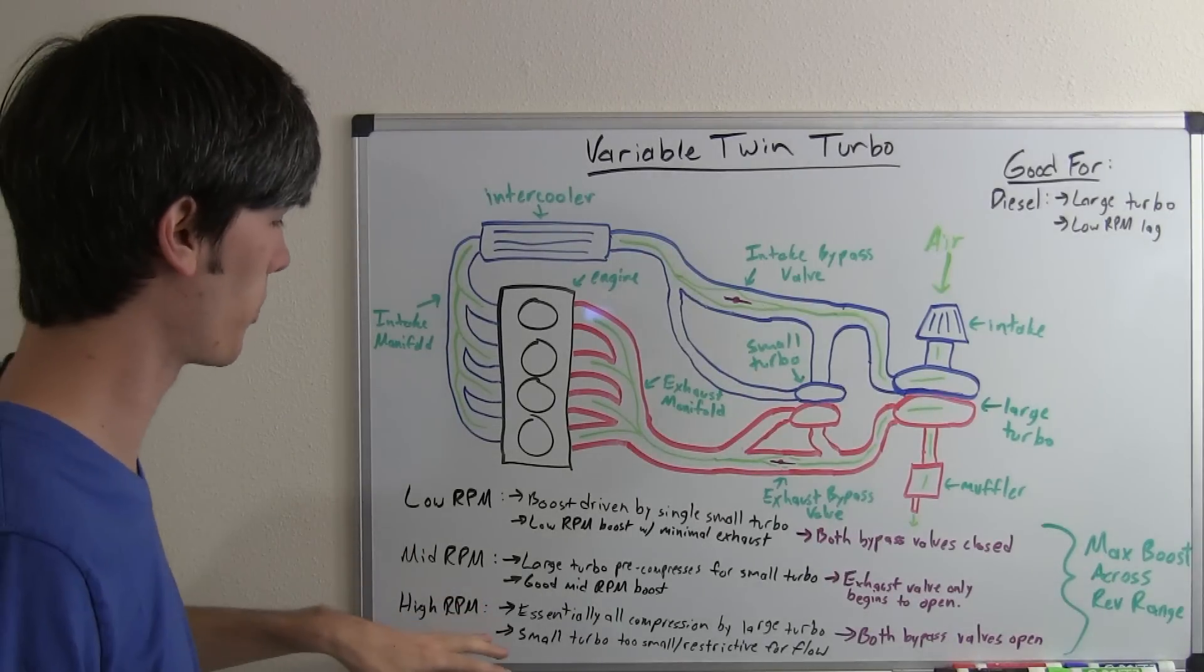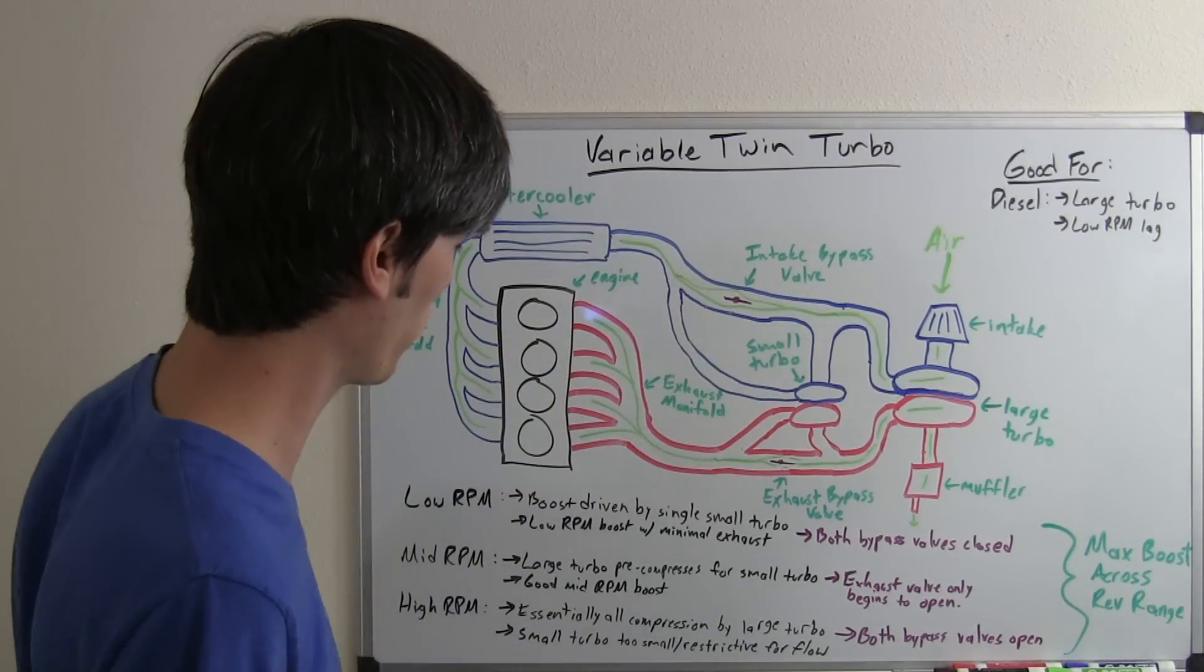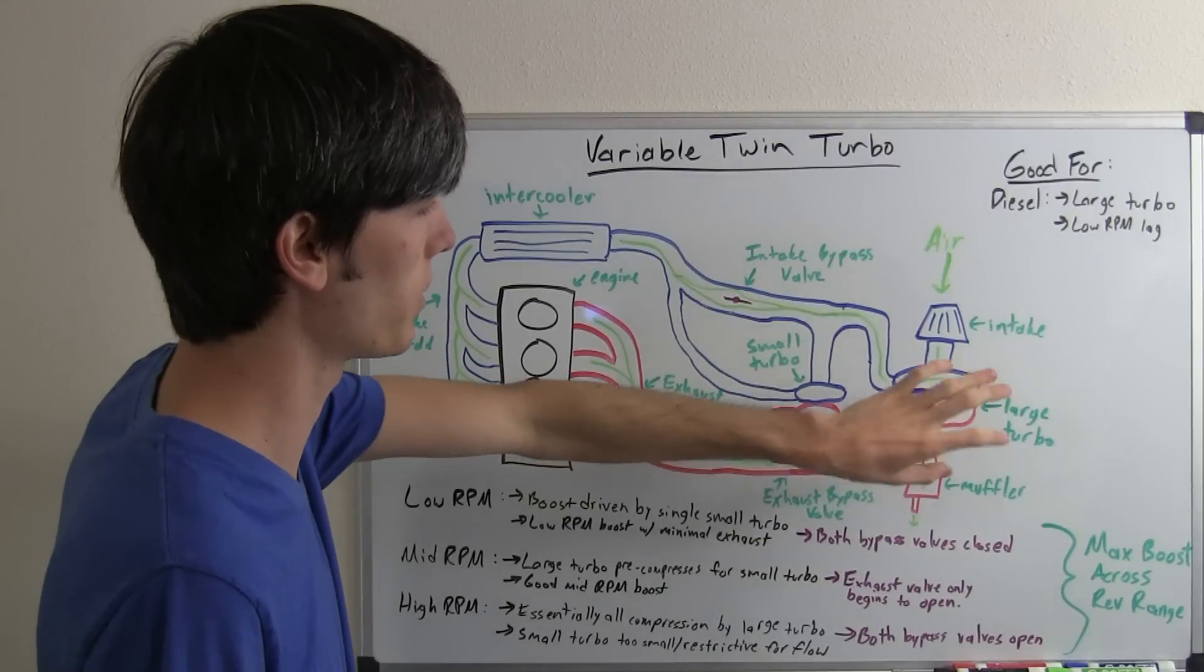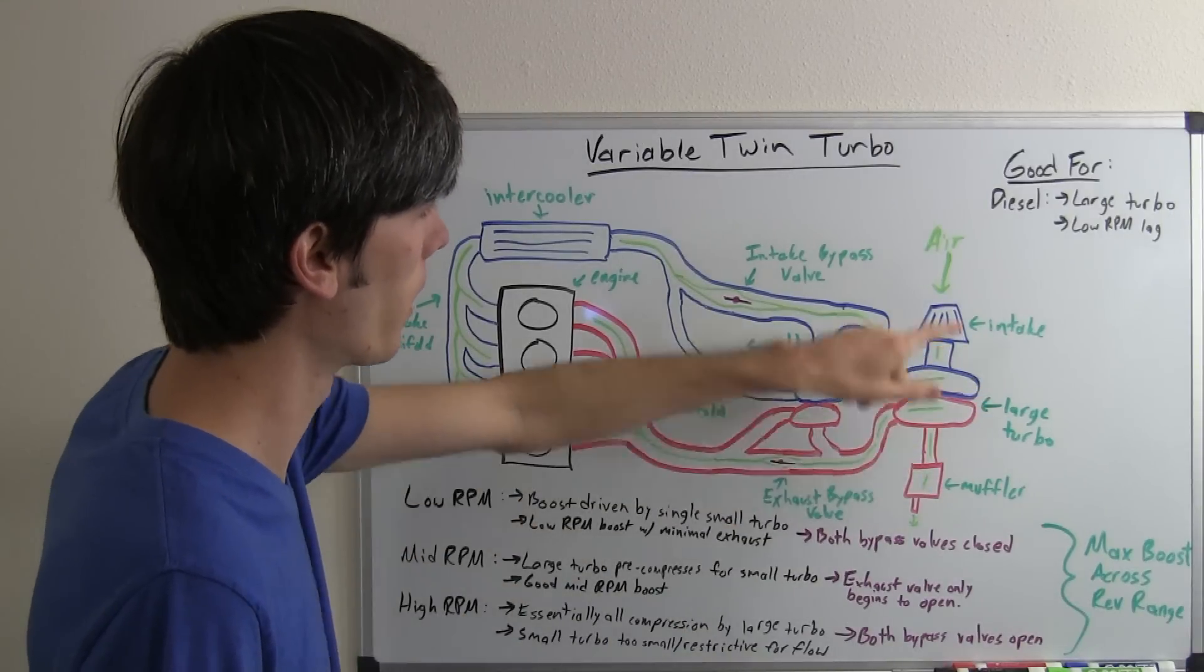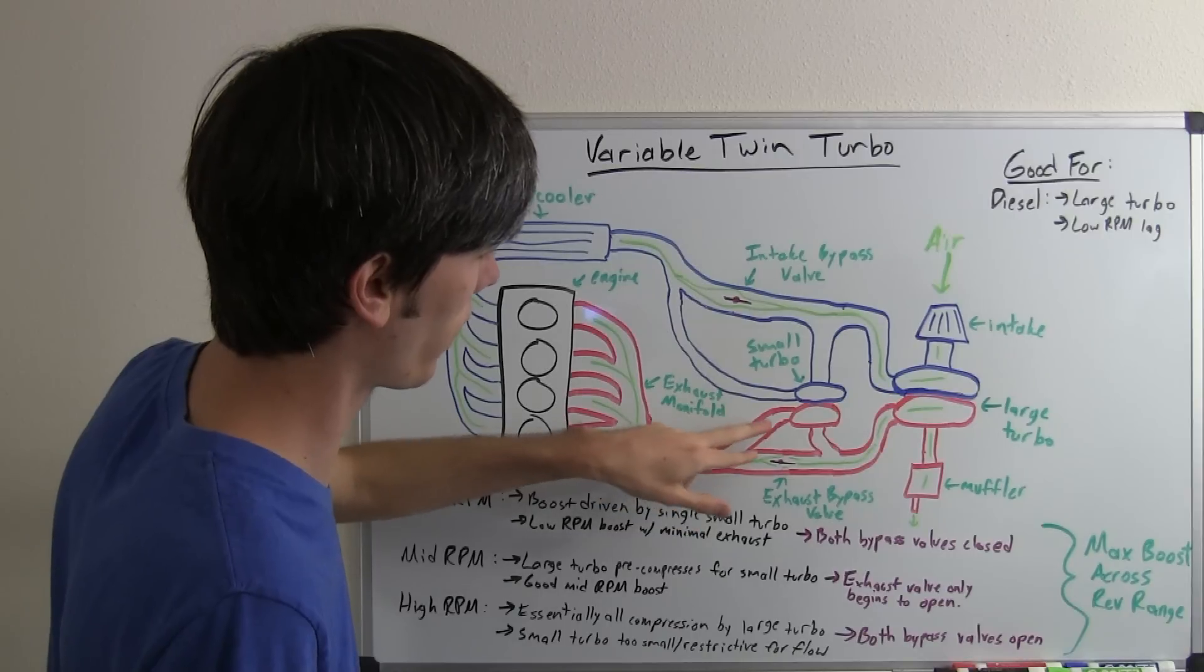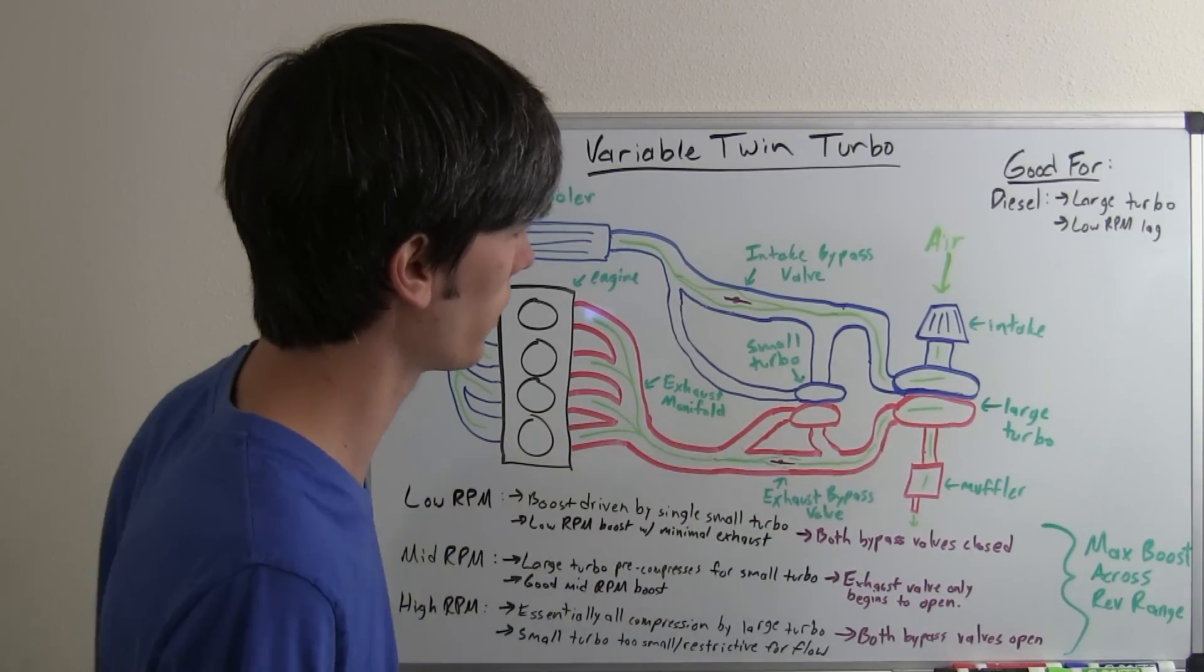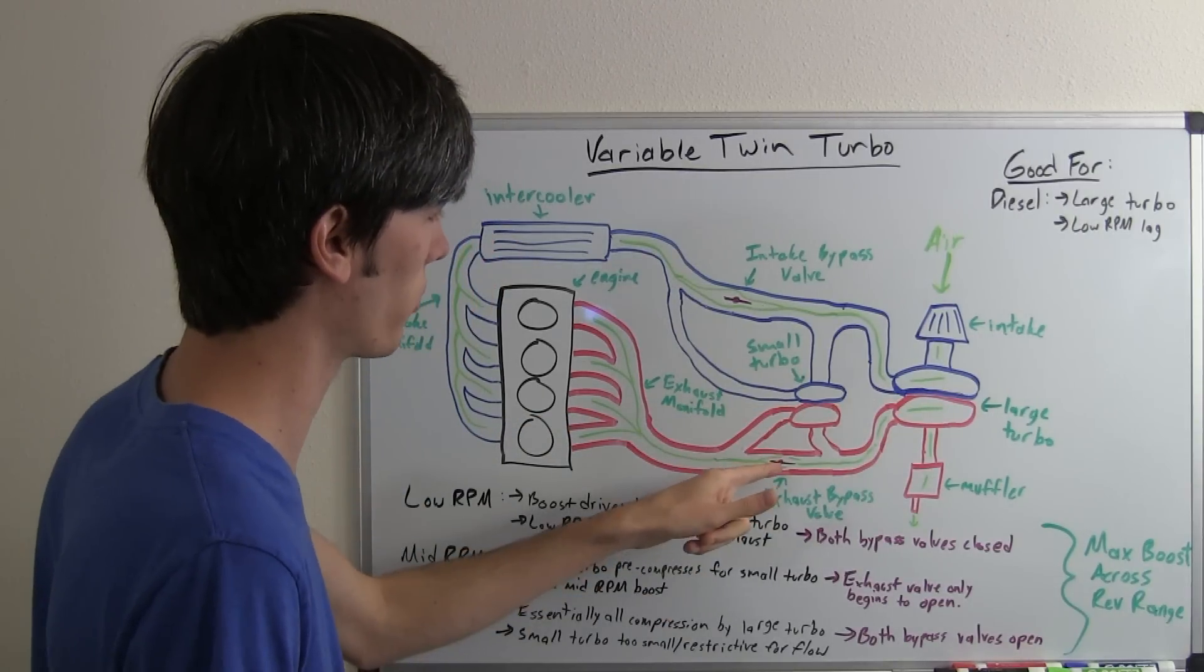For your higher RPM, basically both of these bypass valves are going to be fully open and essentially all the compression is going to be done by the larger turbo. You're going to have your exhaust come out and it's going to have the option of going through either this small turbo or directly to the larger turbo since this bypass valve is open.